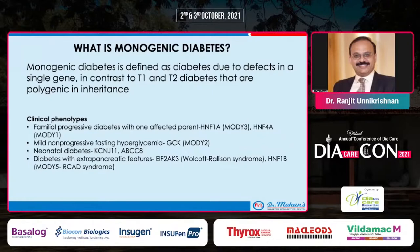The second phenotype is mild non-progressive fasting hyperglycemia, due to a mutation in the glucokinase gene, earlier called MODY 2. Then there is neonatal diabetes, due to mutations in genes encoding the inwardly rectifying potassium channel of the beta cell — the KCNJ11 and ABCC8 genes. Finally, there are syndromic forms like Wolfram syndrome and renal cysts and diabetes syndrome, or MODY 5.